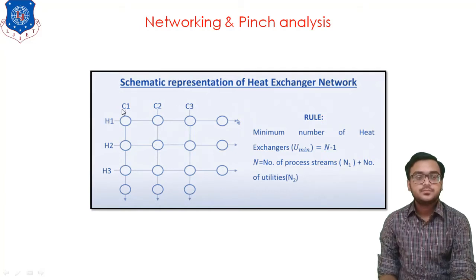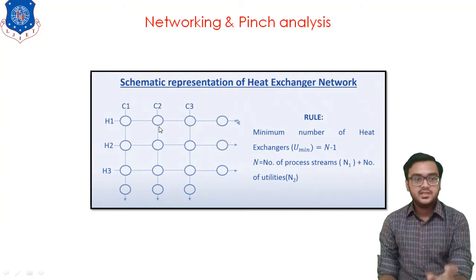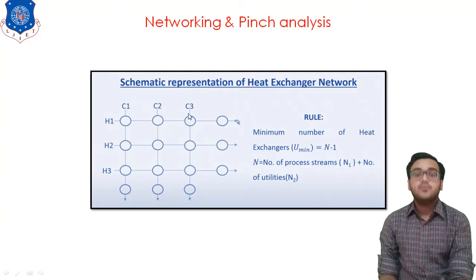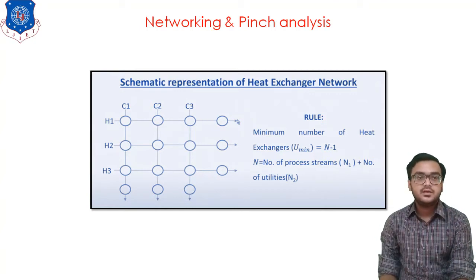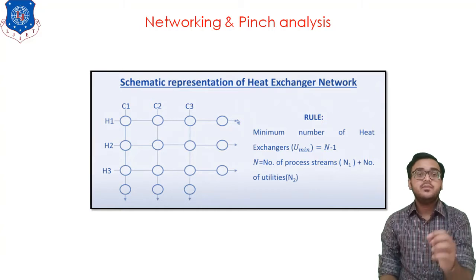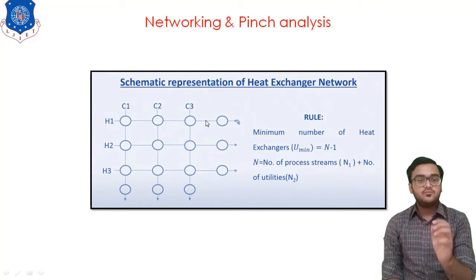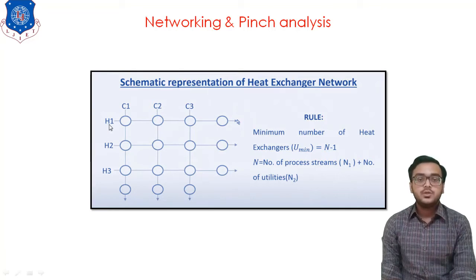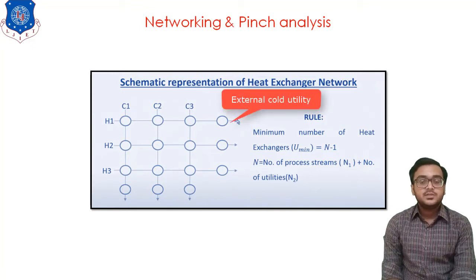H1 is initially flowing at 200 degrees and we want to reduce it to 100 degrees. After arranging the three cold streams over H1, at the outlet of C3 we have a fluid at 150 degrees. But we still want a temperature drop of 50 degrees. To achieve this 50-degree drop, we require one external utility — particularly a cold utility — to reduce temperature from 150 to 100 degrees. This is the external cold utility.